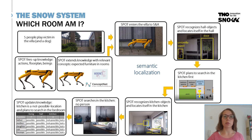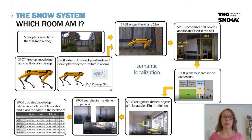Looking at the whole system that the Spot robot will operate in, you can detect several steps as Joris explained in his overview presentation. Spot will walk in the villa and search for victims to rescue. In order to reason and navigate in the villa, he needs to know which scene or room he is in. Therefore, we designed a model which can do scene classification based on detected objects and available knowledge.